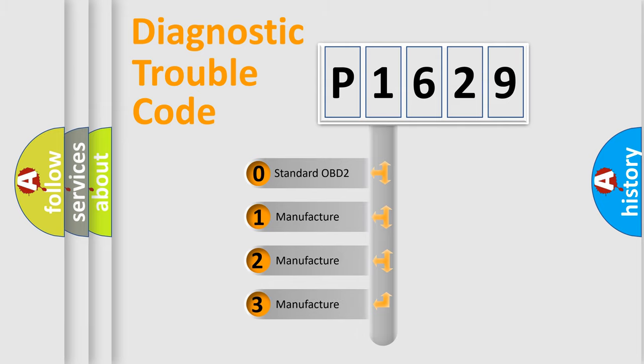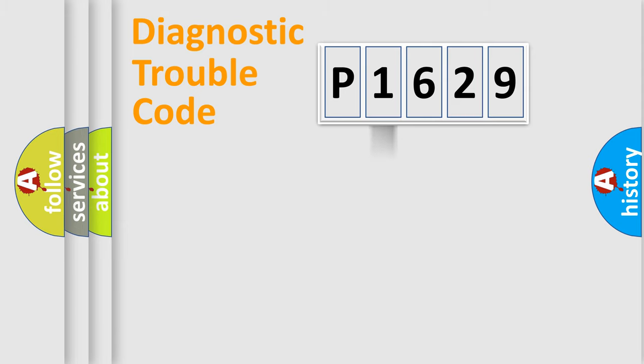If the second character is expressed as zero, it is a standardized error. In the case of numbers 1, 2, or 3, it is a more specific expression of the car-specific error.